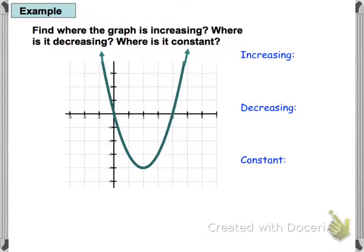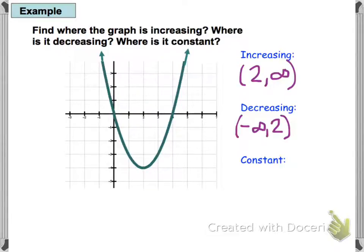Try the next example: pause your video, give it a try, and then we'll check the answers. Hopefully you decided it's decreasing from negative infinity to 2, and from 2 to infinity it's increasing. This graph isn't constant at all.